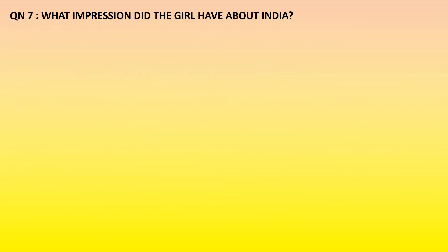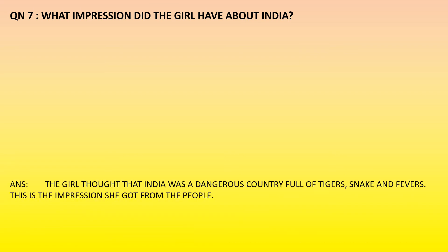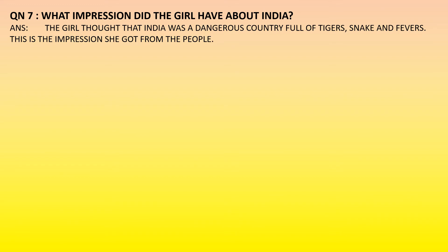Question number seven: what impression did the girl have about India? The girl thought that India was a dangerous country full of tigers, snakes and fevers. This is the impression she got from the people about India.